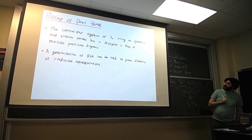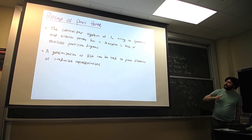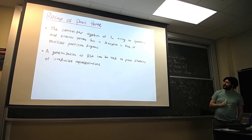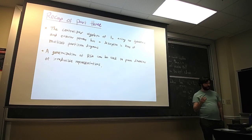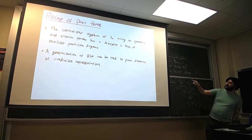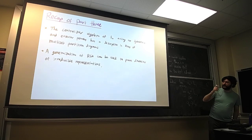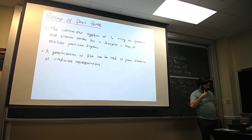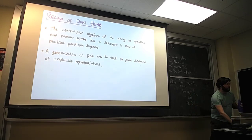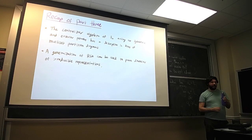To recap part three: the centralizer algebra of the symmetric group S_n acting on symmetric and exterior powers has a description in terms of multiset partition diagrams with colored vertices. A generalization of RSK — Super RSK — can be used to prove the dimensions of these irreducible representations. I'll pause here briefly for questions.